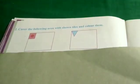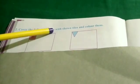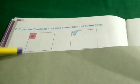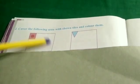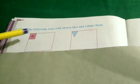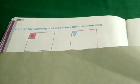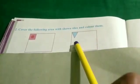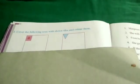On page number 148, second sum, cover the following area with shown tile and color them. In the first sum, as we have done in the class, you have to cover this area with square shaped tiles, make design and color it as given. In the same way, in the second sum, you have to cover this area with triangle shaped tiles and color it. Thank you.